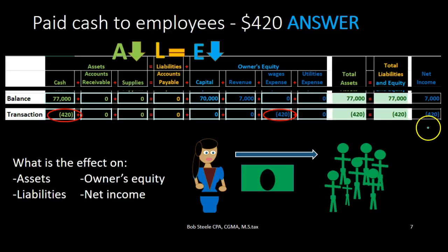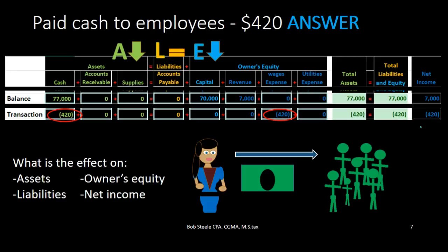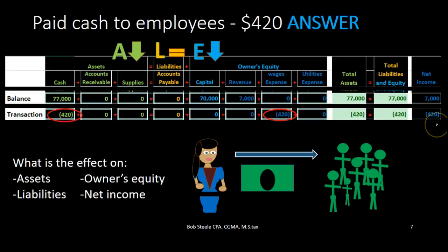We can now see the impact on net income. Total assets equal liabilities plus owner's equity, and net income is going to go down. Why? Because expenses are part of the income statement — these blue accounts are income statement accounts. Net income is calculated as revenue minus expenses, and so expenses bring down net income.